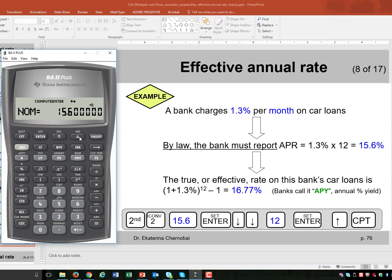Down arrow key again, one more time. I stop when I see effective, and I press compute, 16.765178% per year. This is the effective rate. If you round it to 2 decimal places, you will get 16.77%, like on my slide.